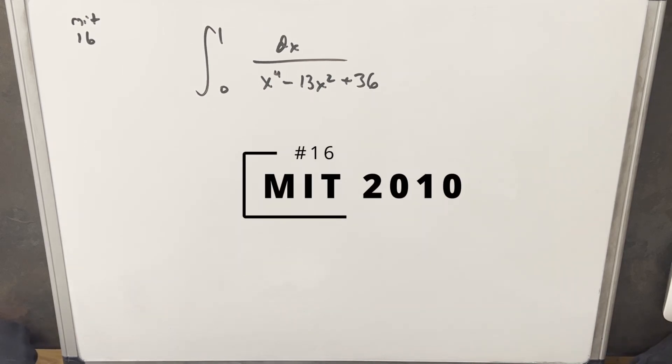Hey, we have here another integral from the MIT Integration Bee 2010. This one was problem 16. We have the integral from 0 to 1 of dx over x to the 4th minus 13x squared plus 36.